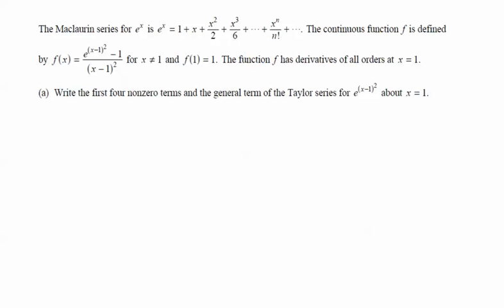Since we're given e to the x above, I'll start with writing e to the x minus 1, and that should just be a replacement of x with x minus 1, and we're on our way. So 1 plus x minus 1, plus x minus 1 squared over 2, plus x minus 1 cubed over 6, etc.